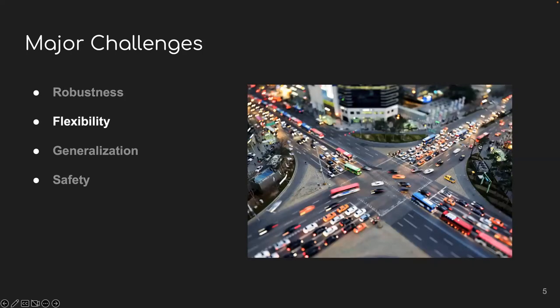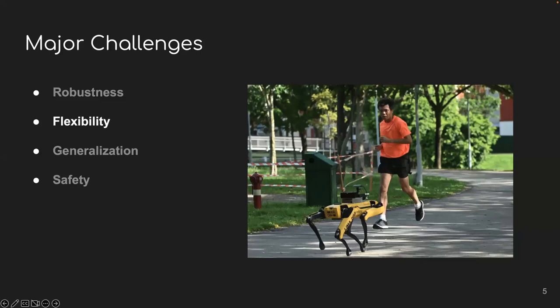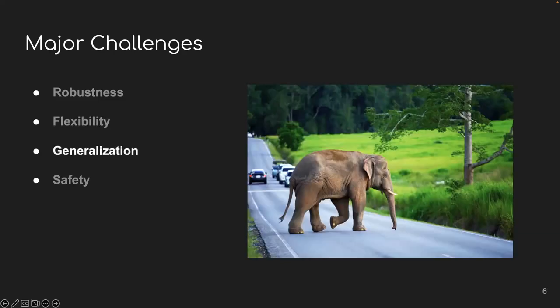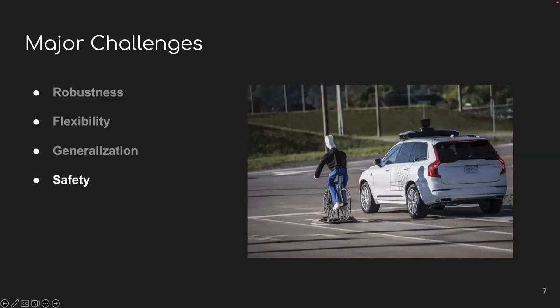And second, our world is highly complex. We have sophisticated traffic flow. We also have many different kinds of traffic participants. So we need flexible system that can handle all these complexities. And we also need generalization so that we can handle unexpected cases on the road. And finally, it would be ideal if somehow we can quantify the safety of our driving system so that we can trust our life on it.